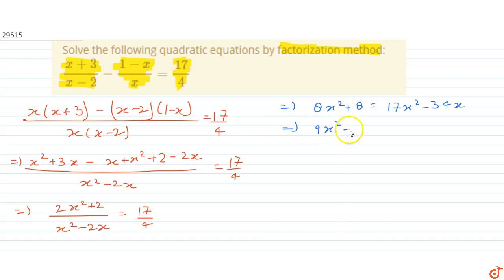Now we will split 34 and write it as 9x² - 36x + 2x - 8 equals 0. Take out 9x common, we get 9x(x - 4) plus, take 2 common, we get 2(x - 4) equals 0.